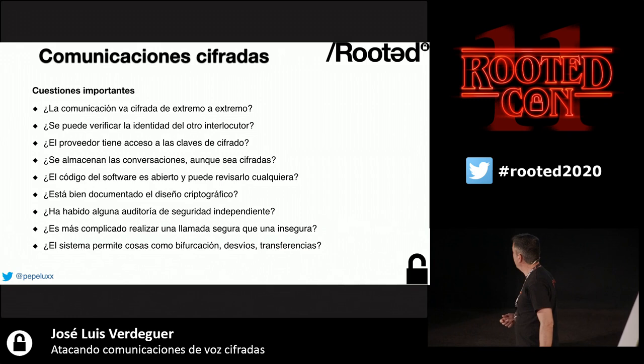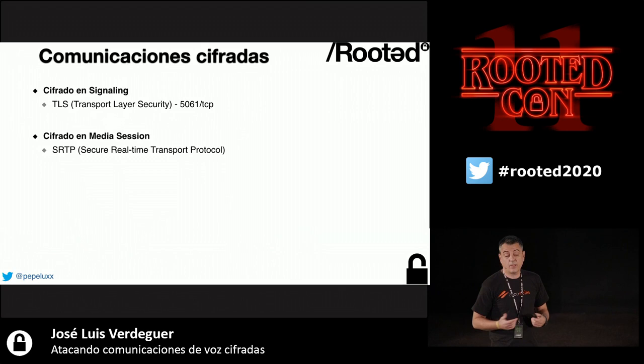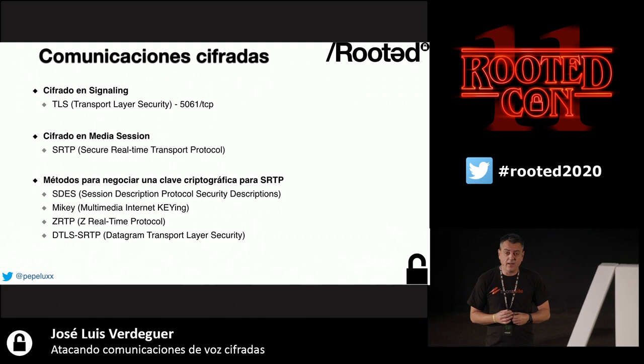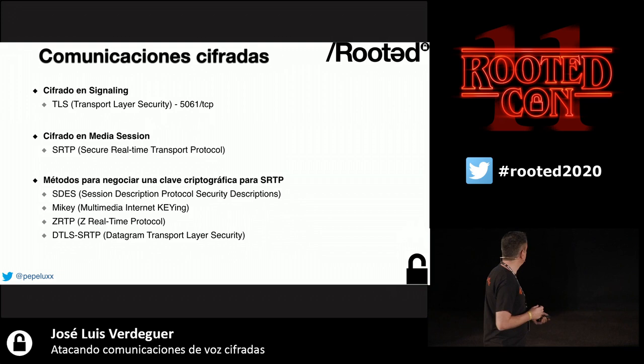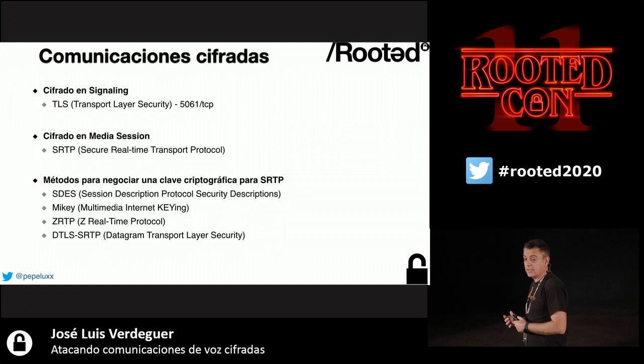The protocol allows us to encrypt both signaling and media. For encrypting signaling we use TLS. For encrypting the media session we use SRTP. For SRTP key exchange there are four options: SDES (comes by default in SIP), MIKEY, ZRTP, and DTLS-SRTP.